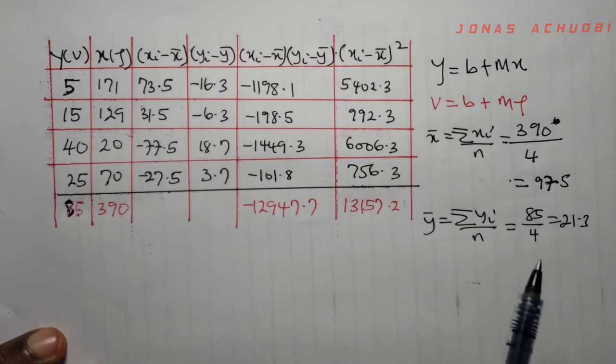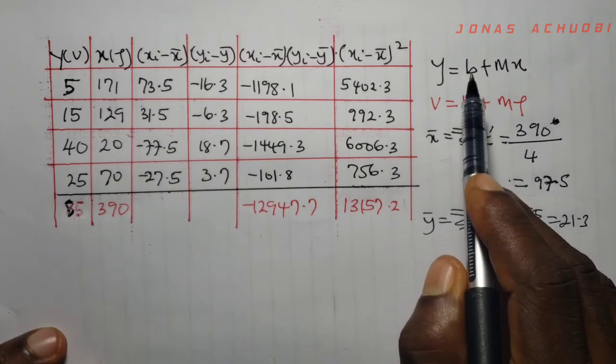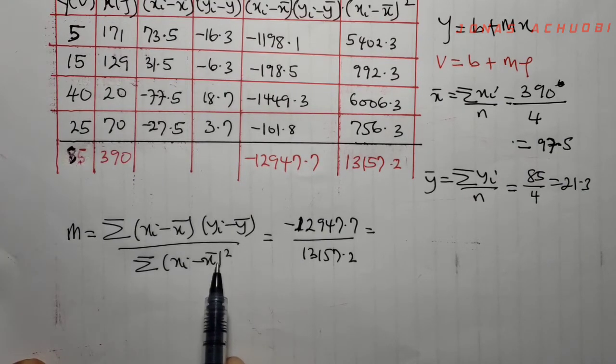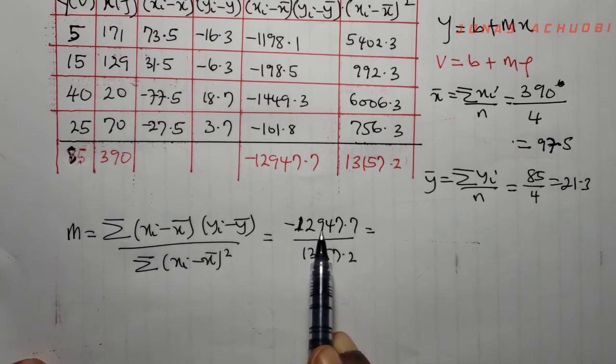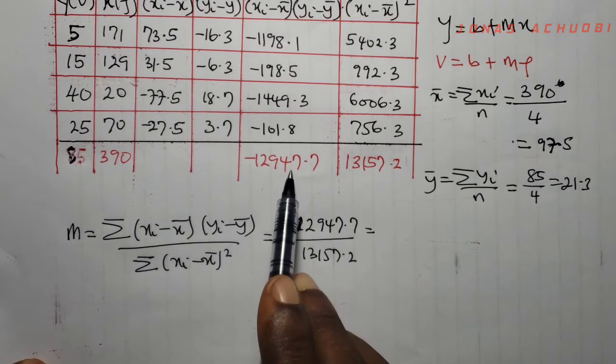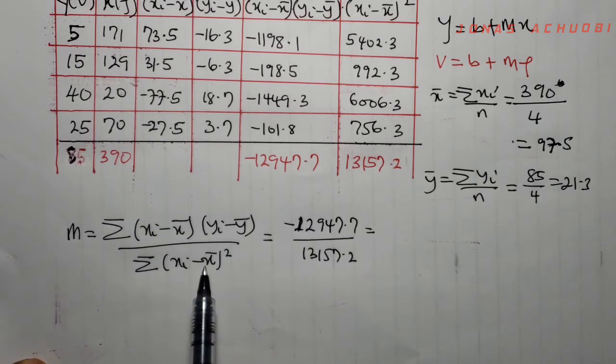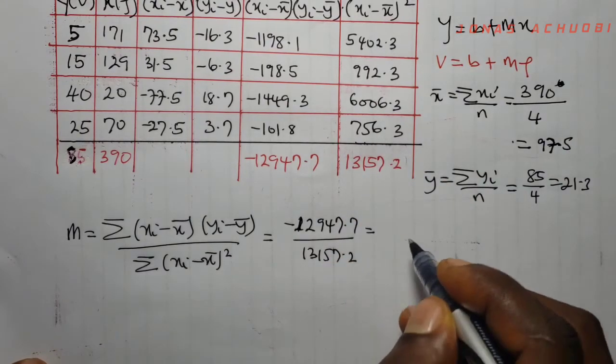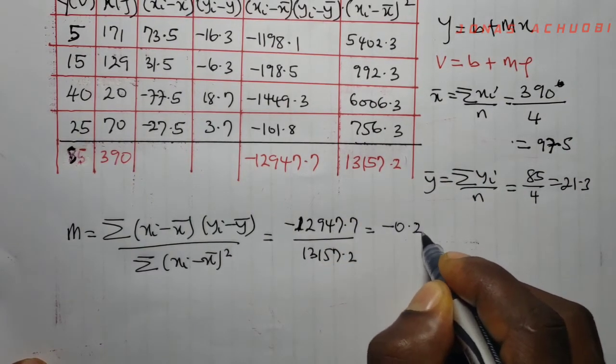With this we can now calculate the value of m. So m equals negative 12947.7 divided by this term, and this gives us minus 0.2.